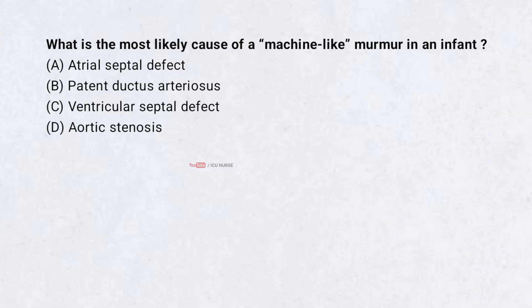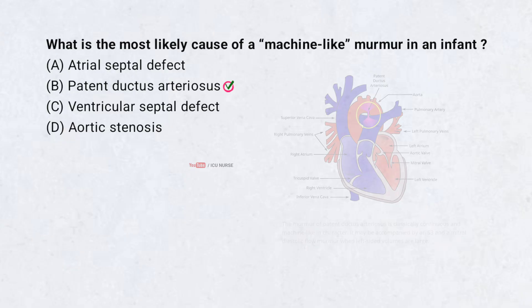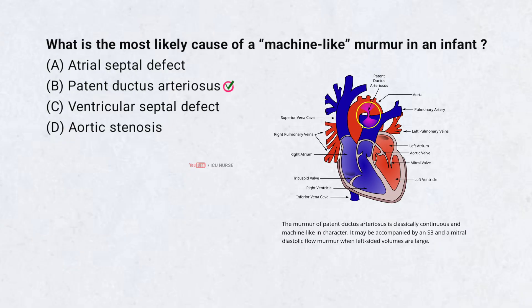What is the most likely cause of a machine-like murmur in an infant? A. Atrial septal defect. B. Patent ductus arteriosus. C. Ventricular septal defect. D. Aortic stenosis. Correct answer: B. Patent ductus arteriosus.